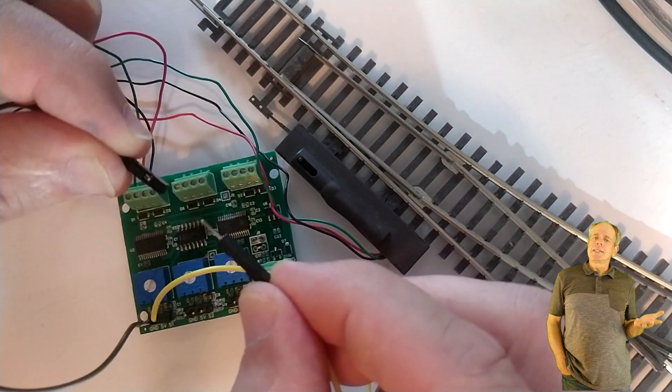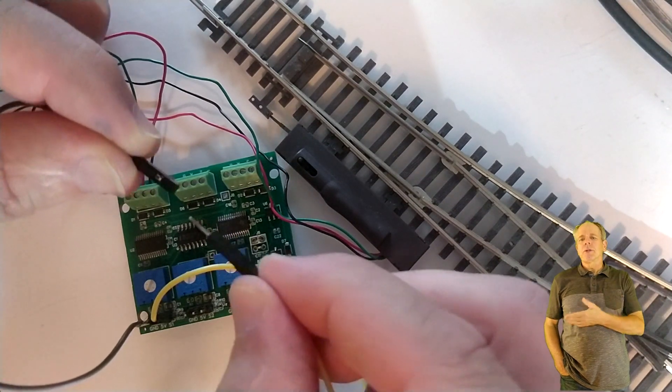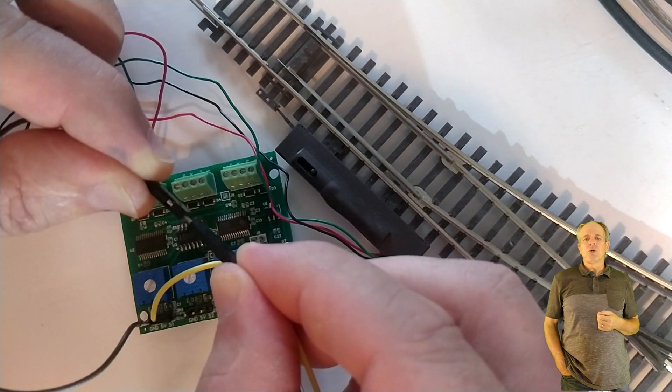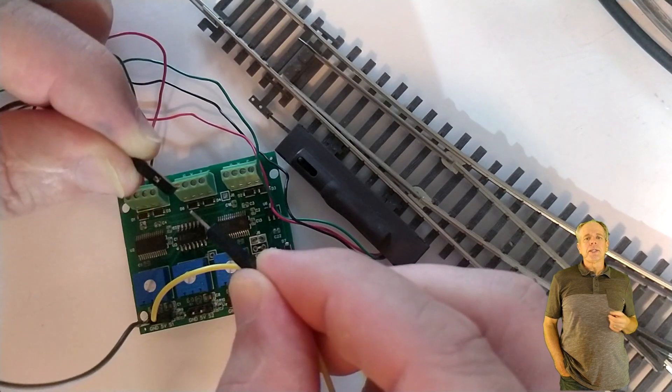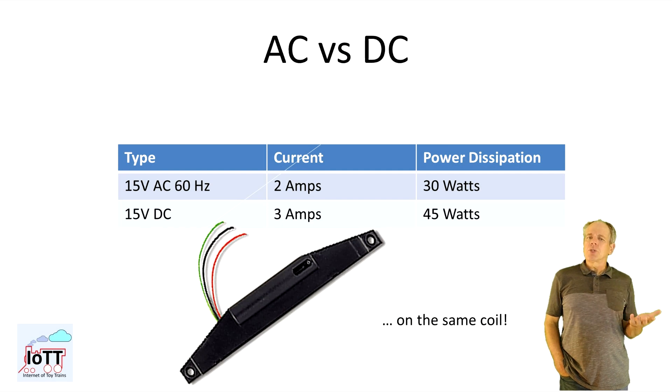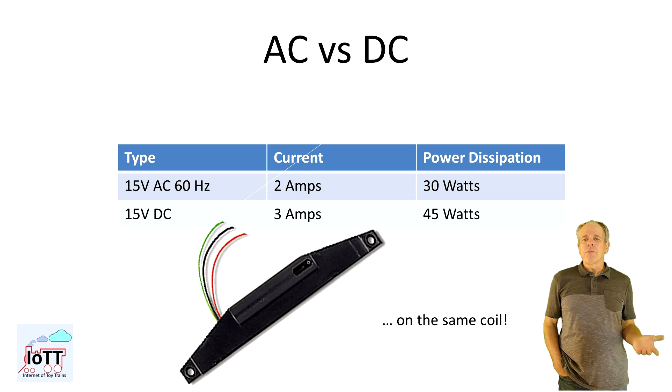When powered with DC, the current is only limited by the ohmic part of the resistance. Therefore, the current is getting higher quickly and that's why we need to limit the pulse length. Just to show you the difference, when feeding 15V AC with 60 Hz, the current is about 2A, and the power dissipation of the coil therefore about 30W. Already in this case, you want to keep the pulse short, but when powering it with 15V DC instead, the current is 3A resulting in a power dissipation of 45W and the coil gets heated up even faster. So, keep the pulse short.